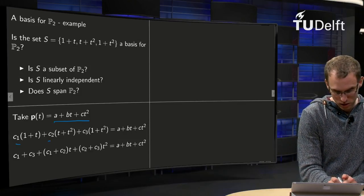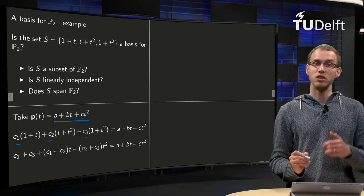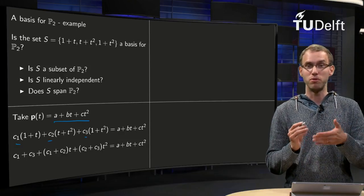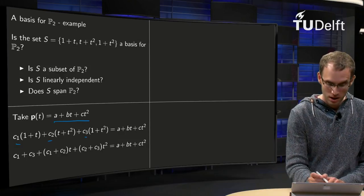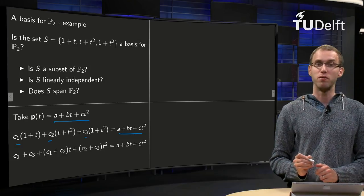So we have to find weights c₁, c₂, and c₃ such that c₁ times v₁ plus c₂ times v₂ plus c₃ times v₃ is exactly this vector over here.